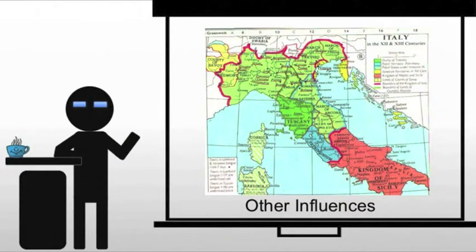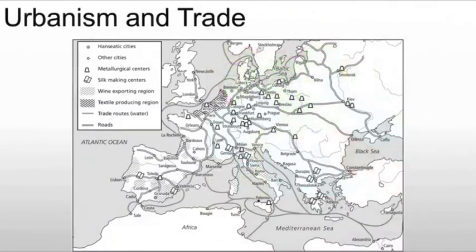There are other influences I want to touch on as well. First, there's urbanism and trade. In Northern Europe at this time — in the 12th and 13th century — we see the continued use of the feudal system, which is effectively a form of serfdom where you're paying food rent to a landlord and have no ability to move; it's a heavily agricultural society. However, in Italy and along the Mediterranean, we see a much more urban society focusing on trade.